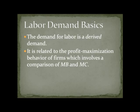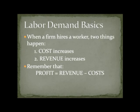Just like any optimizing economic actor, the firm is comparing the marginal benefits and the marginal costs of a decision. When deciding whether or not to hire, the firm looks at the marginal benefit and the marginal cost. When a firm hires a worker, two things happen: the firm's total costs go up because you have to pay the worker, and at the same time revenues go up, because the worker is going to produce output and you're going to sell that output. So you have both cost and revenue going up.